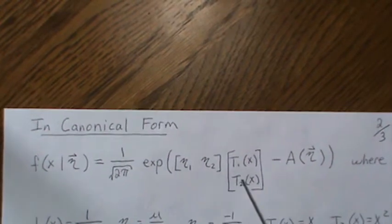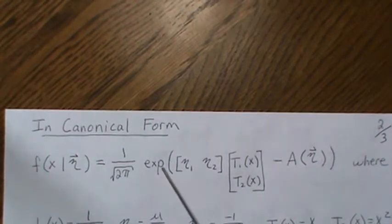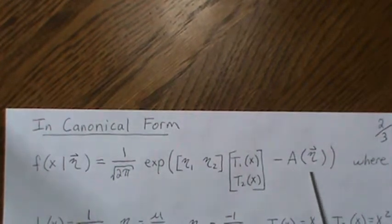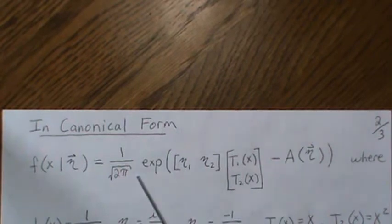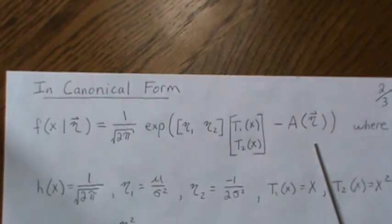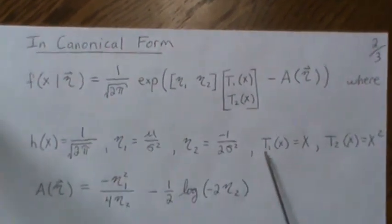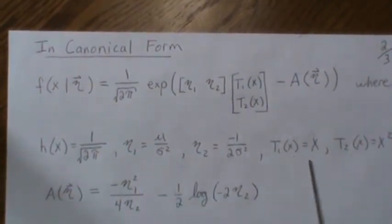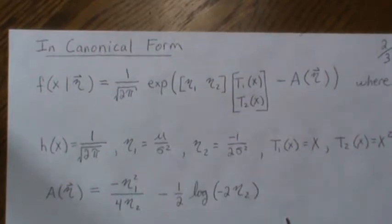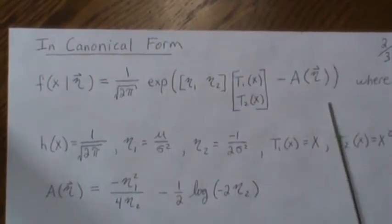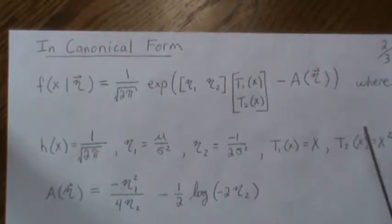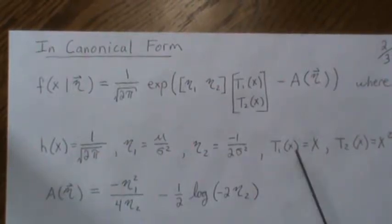In canonical form, think of it like this: the eta vector is just eta 1 and eta 2, then your sufficient statistics, and then your log partition that makes this integrate to one. This is canonical form, where each of those represents a specific part of the formula. The beauty of canonical form is that we get means, variances, and moments in general easily from this log partition.